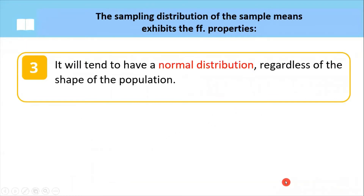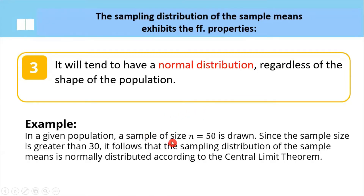For our third property, as discussed earlier, the sampling distribution of the sample means tends to have a normal distribution regardless of the shape of the population, and this is supported by the central limit theorem. So for example, if we have a sample size of 50, since it is greater than 30, it follows that the sampling distribution of the sample mean is normally distributed according to the central limit theorem.